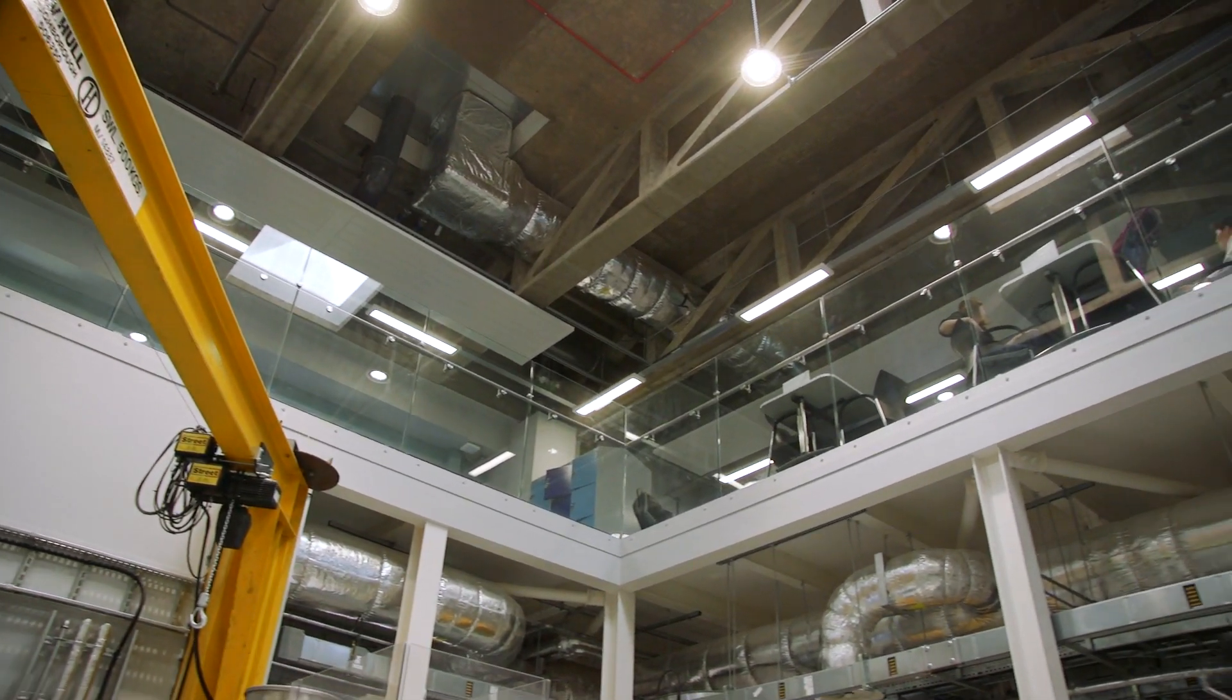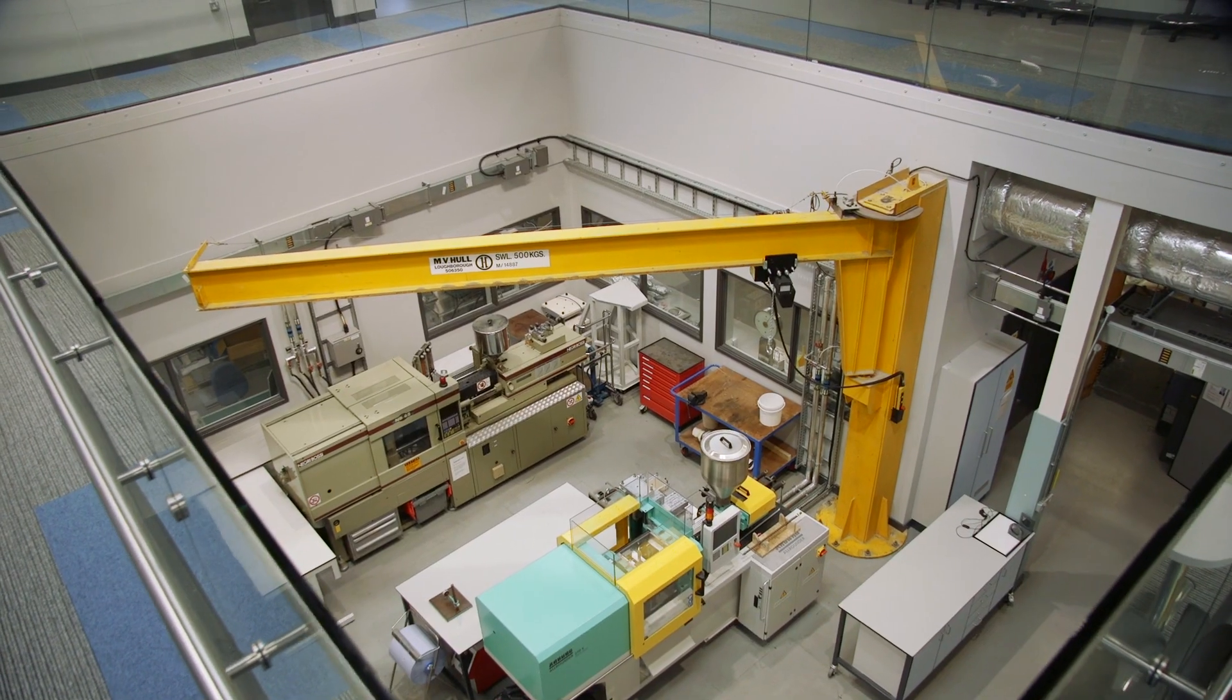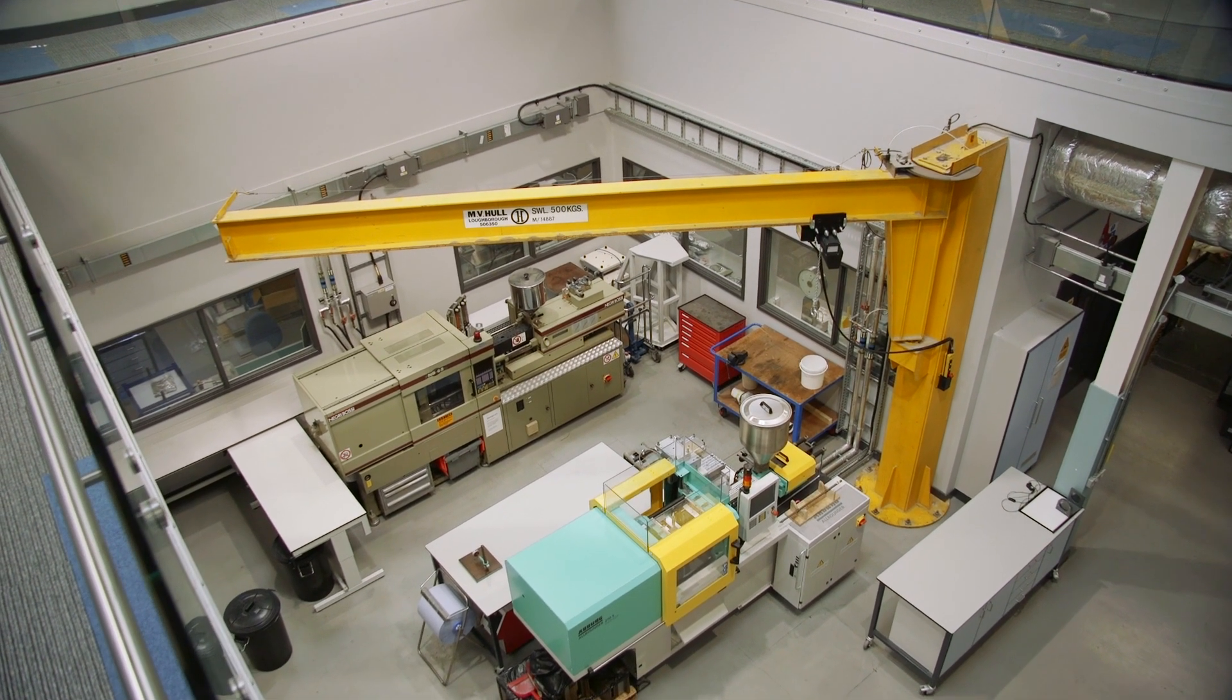This is our polymer processing lab. Up here we have machines that test polymer properties like viscosity, and downstairs we have small-scale industrial machines like injection moulders and extruders.